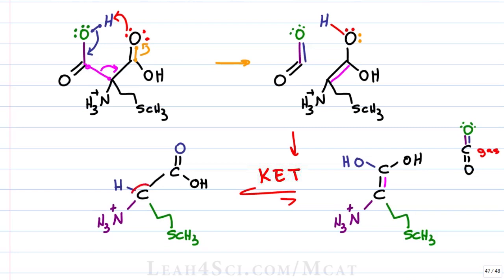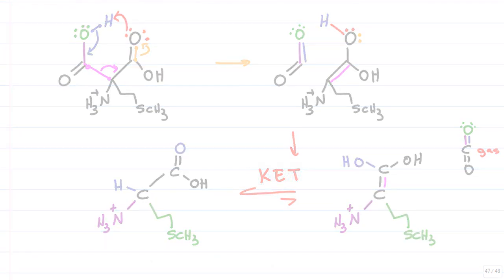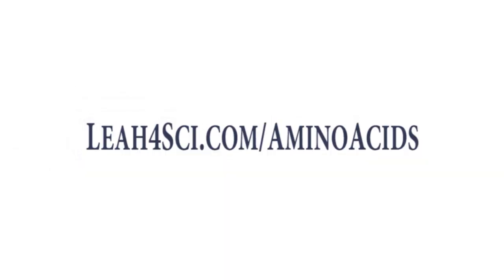Let's make sure everything is there: alpha carbon bound to a protonated alpha amine, alpha carboxy, alpha hydrogen, and methionine side chain. Be sure to join me in the next video where we look at amino acid hydrolysis and dehydration peptide synthesis. You can find it along with this entire amino acid video series, practice quiz, and cheat sheet on my website leah4sci.com/aminoacids. If you found this video helpful, please give it a thumbs up so I know you like these kinds of tutorials and that I should keep making more.